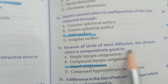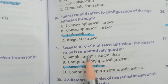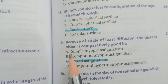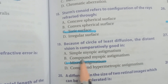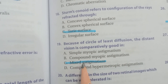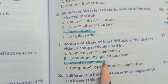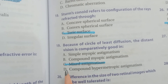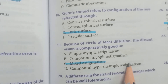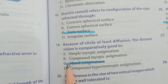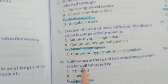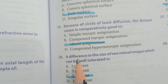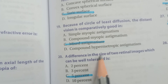Question number nineteen: because of the circle of least diffusion, distance vision is comparatively good in — A) simple myopic astigmatism, B) compound myopic astigmatism, C) mixed astigmatism, D) compound hypermetropic astigmatism. The correct option is C) mixed astigmatism.